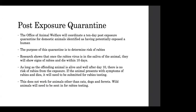When we receive a report of potential human exposure to rabies, we will coordinate with the Office of Animal Welfare for domestic animals such as dogs, cats, and ferrets. This entails a 10-day post-exposure quarantine for the animals identified as exposing a human. The purpose of this quarantine is to determine the risk of rabies to the person exposed. Research shows that once the rabies virus is in the saliva of the animal, the animal will show symptoms and die within 10 days. As long as the offending animal is alive and well after day 10, there is no risk of rabies. However, if the animal presents with symptoms and dies during quarantine, it needs to be submitted for rabies testing. This does not work for any animals other than cats, dogs, and ferrets — wild animals will need to be sent in for rabies testing.